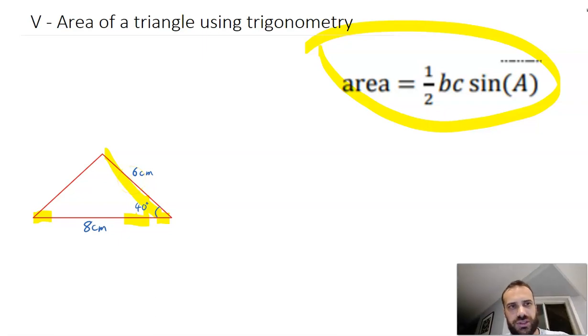And it's really just as simple as just putting in your information. So area equals half. Let's call this side B. Let's call this side C. And this is angle A. You can label up the whole triangle if you want.